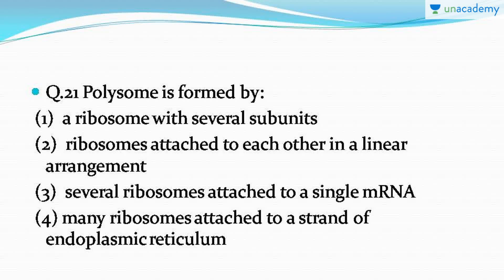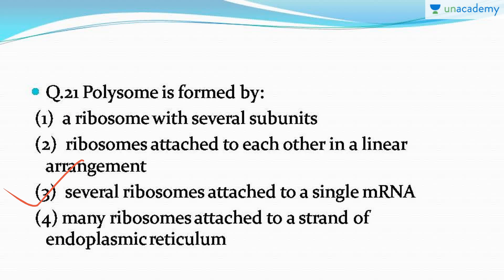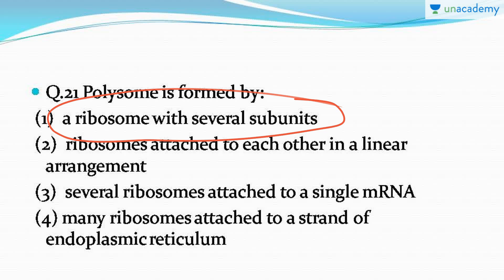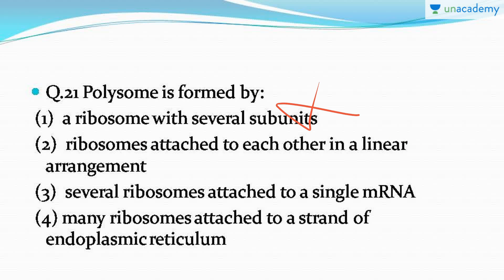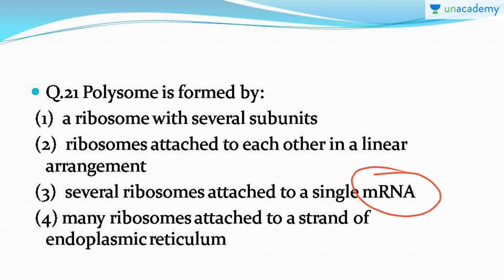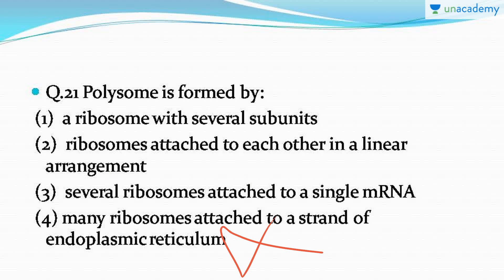The next question: polysome is formed by — it's a very easy question, but please be careful as the options are really confusing. The correct answer is option number three: several ribosomes attached to a single mRNA are called a polysome. Option one is wrong because a ribosome has only two subunits. Option two is wrong because ribosomes cannot attach to each other without mRNA. Option four is wrong because ribosomes attached to endoplasmic reticulum are not called a polysome.